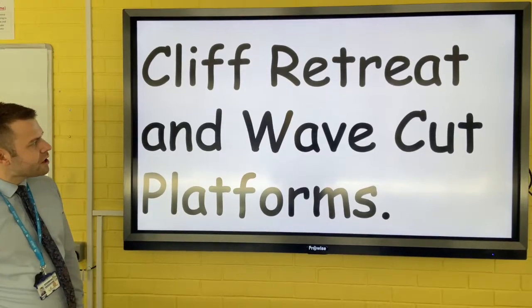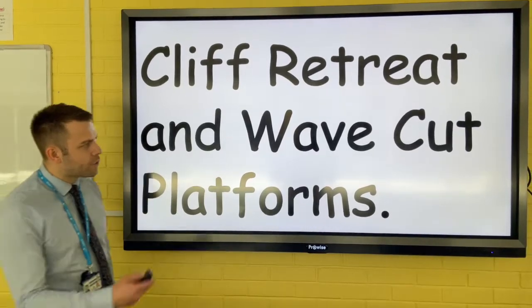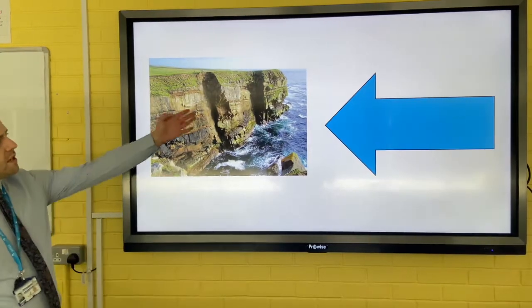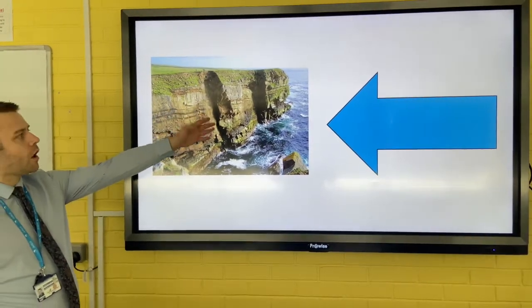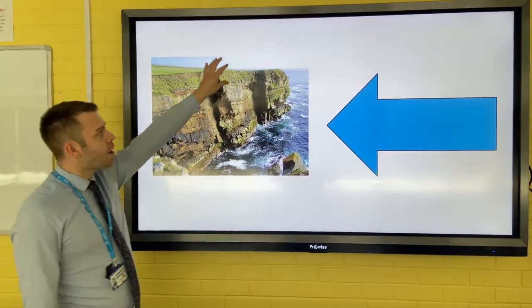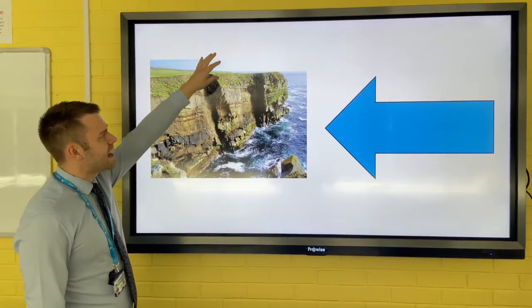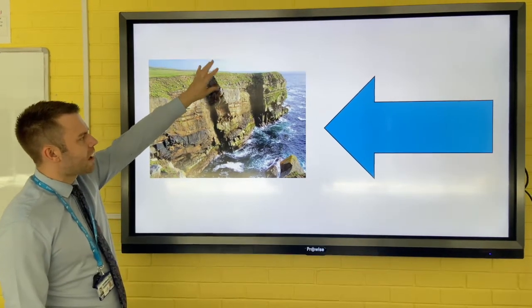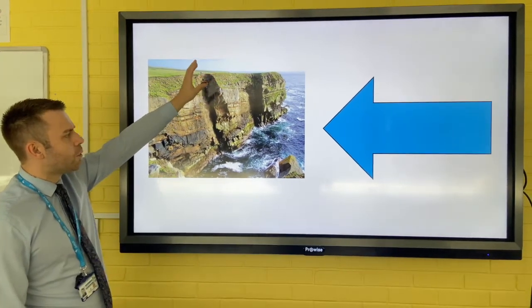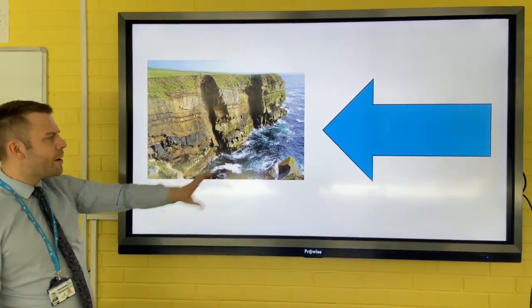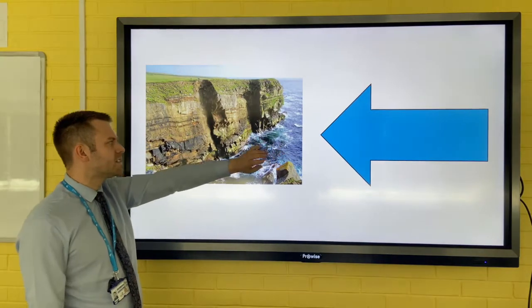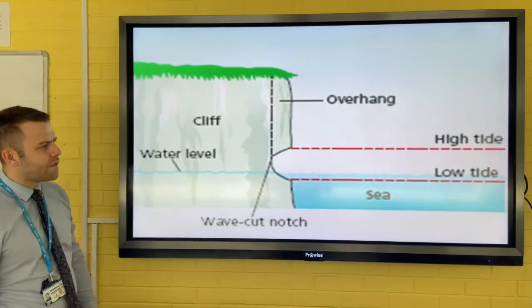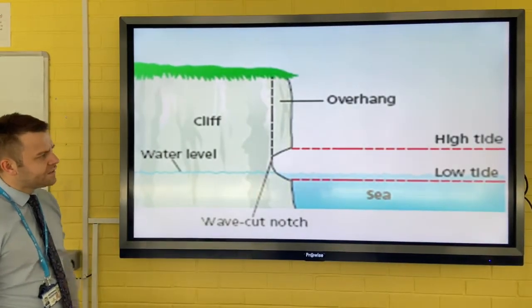Cliff retreat and wave cut platforms. This is the coastline. The top of this cliff face is being attacked and weathered by biological, chemical, and freeze-thaw weathering. However, we're focusing on the marine processes that occur at the base of the cliff face.